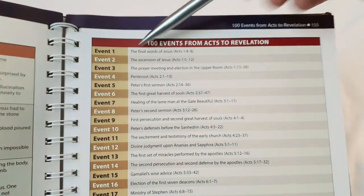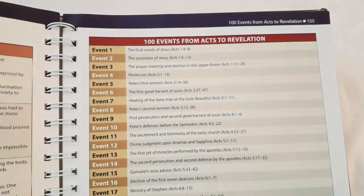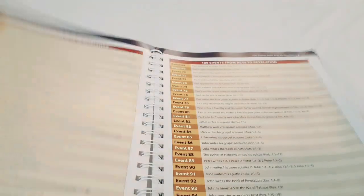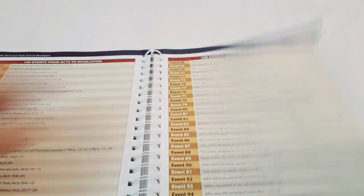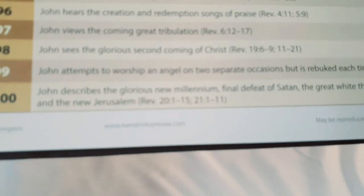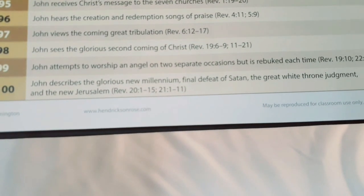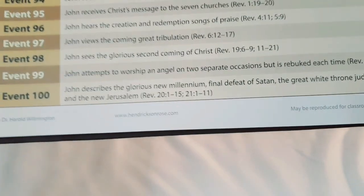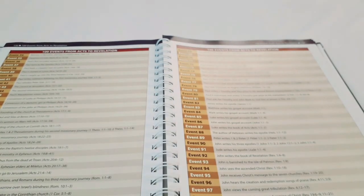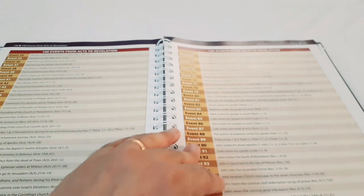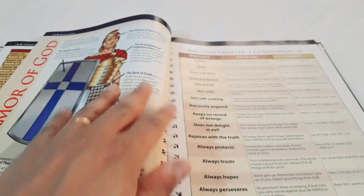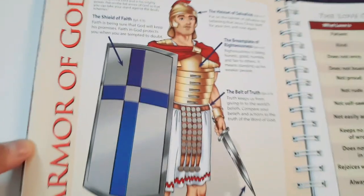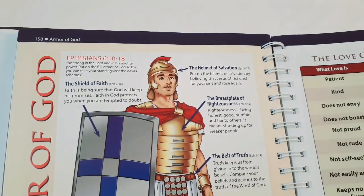A hundred events from Acts to Revelation, the final words of Jesus before his ascension to sit at the right hand of the Father. Going all the way to the end — John describes the new millennium, the final defeat of Satan, the great white throne judgment, and the new Jerusalem together with the new heaven and the new earth. Don't fear — we have a new heaven and new earth and new Jerusalem coming; we're going to be reigning with our King and Lord and Savior forever. Then the armor of God from Ephesians chapter 6, based on a Roman centurion.